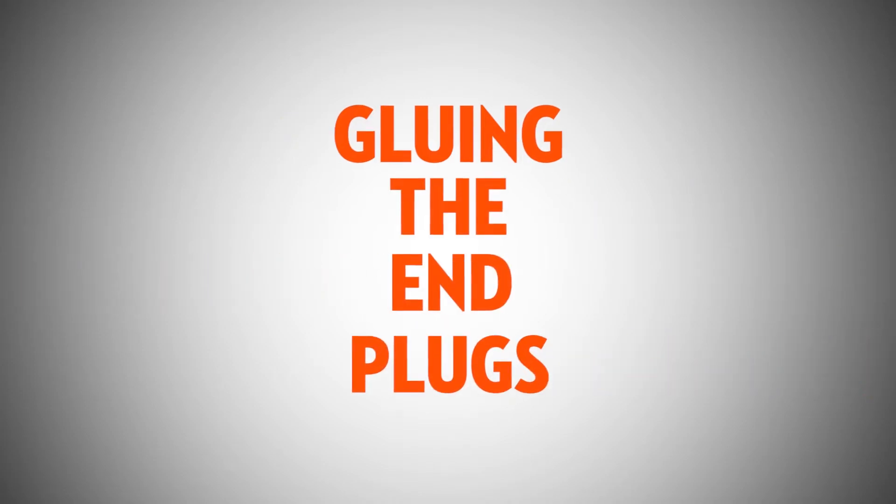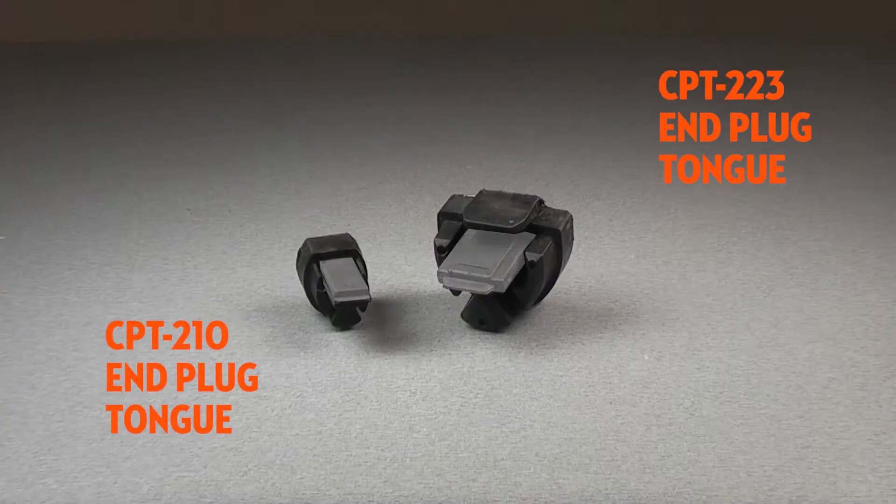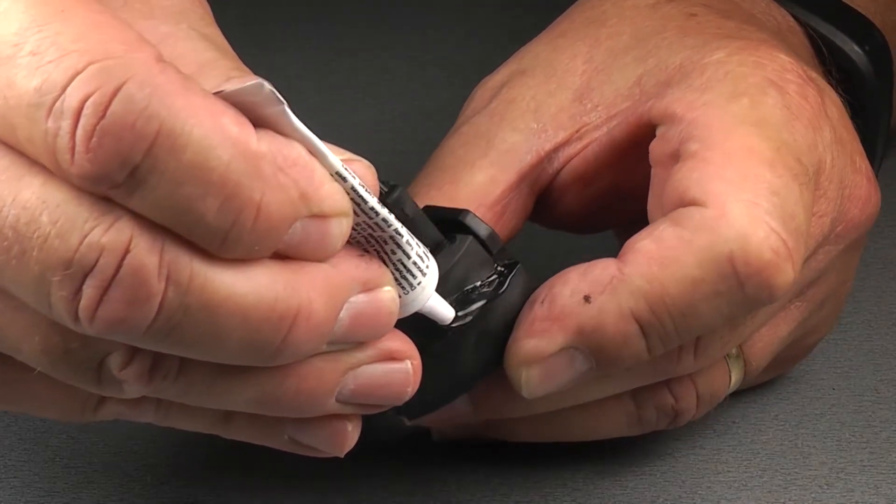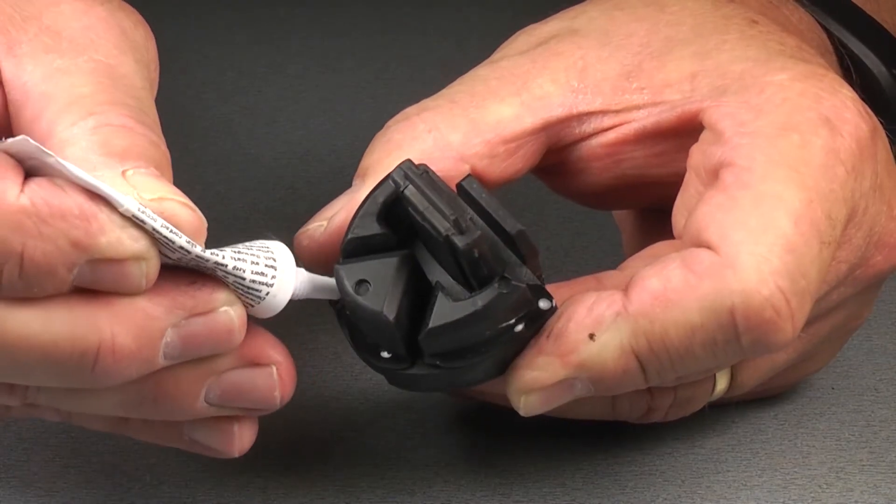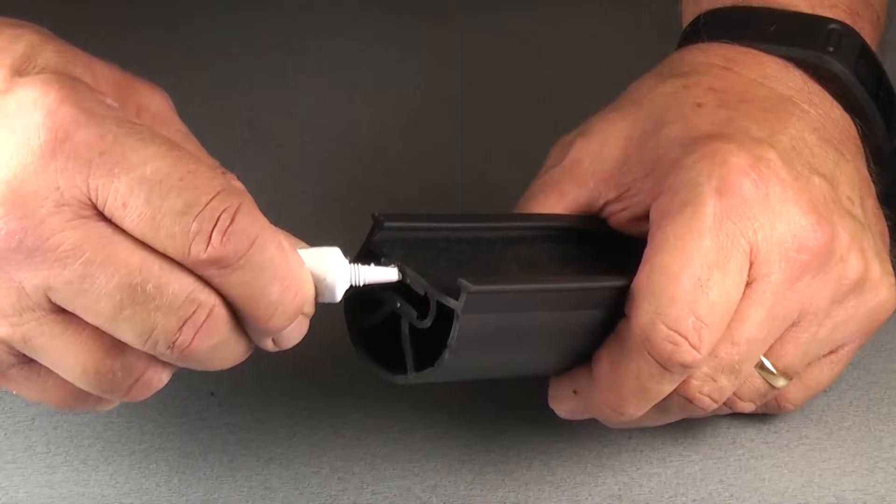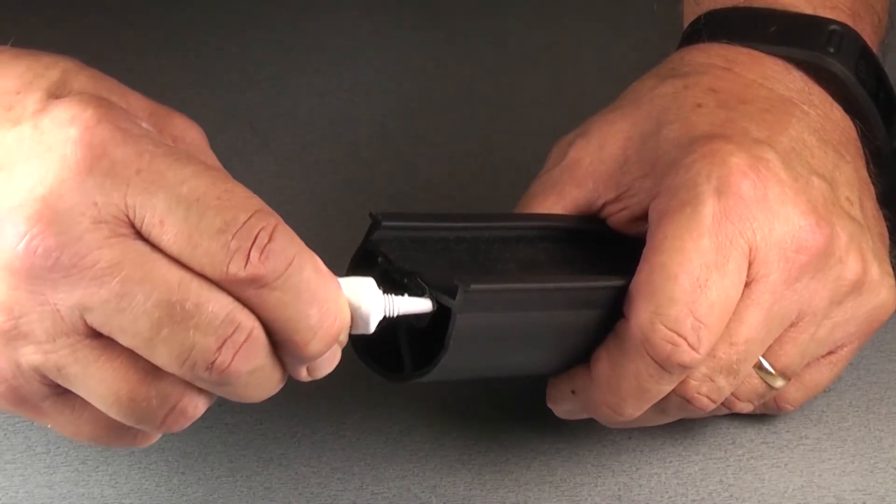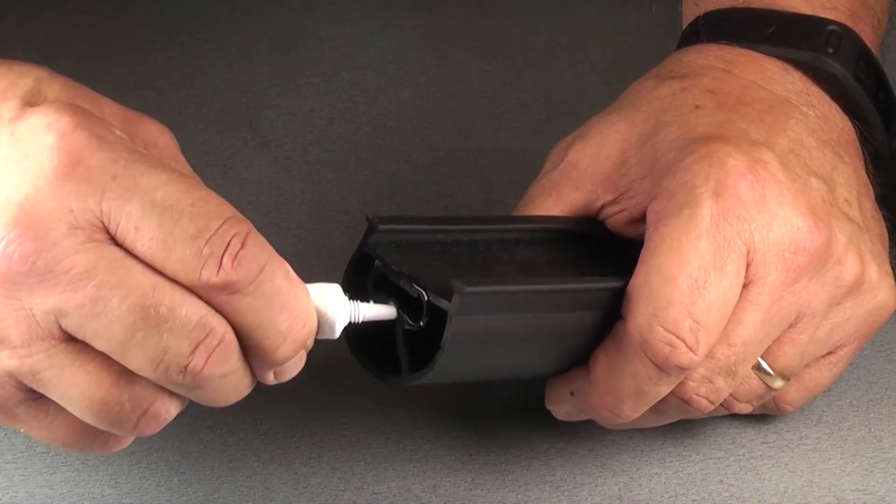When applying glue to the end plugs, take care not to get any glue on the conductive tongue. If by chance you do have any glue transfer to the tongue, simply wipe it off with a clean cloth. For added adhesive, add a small bead of glue to the outer edge of the extrusion where the tongue inserts.